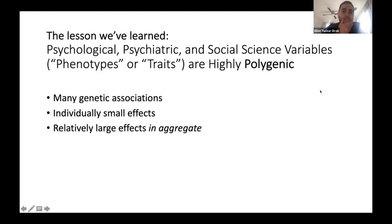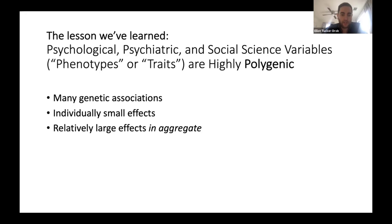Over the past 15 or so years of GWAS, one core lesson we've learned is that for psychological, psychiatric, social, medical, and anthropometric variables, these phenotypes or traits are highly polygenic. That means there's not just one or two or a dozen genetic variants indexing genetic risk; rather, there are thousands upon thousands of genetic variants statistically associated with the outcomes investigated, each with individually very small effects, but in aggregate the effects can be rather large by the standards of observational correlational research.